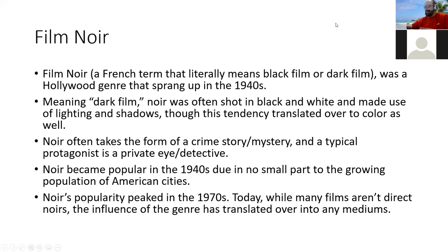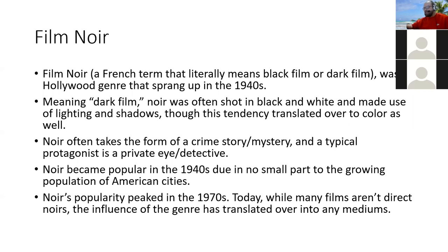Noir is often shot in black and white and makes heavy use of lighting and shadows. That tendency translated over to color film as well — Vertigo definitely makes use of lighting and shadows. As far as structure, noir often takes the form of a crime story or mystery. A typical protagonist is a private eye detective. These are usually murder mysteries, or they might start out with someone having an affair. They often take this detective noir structure.